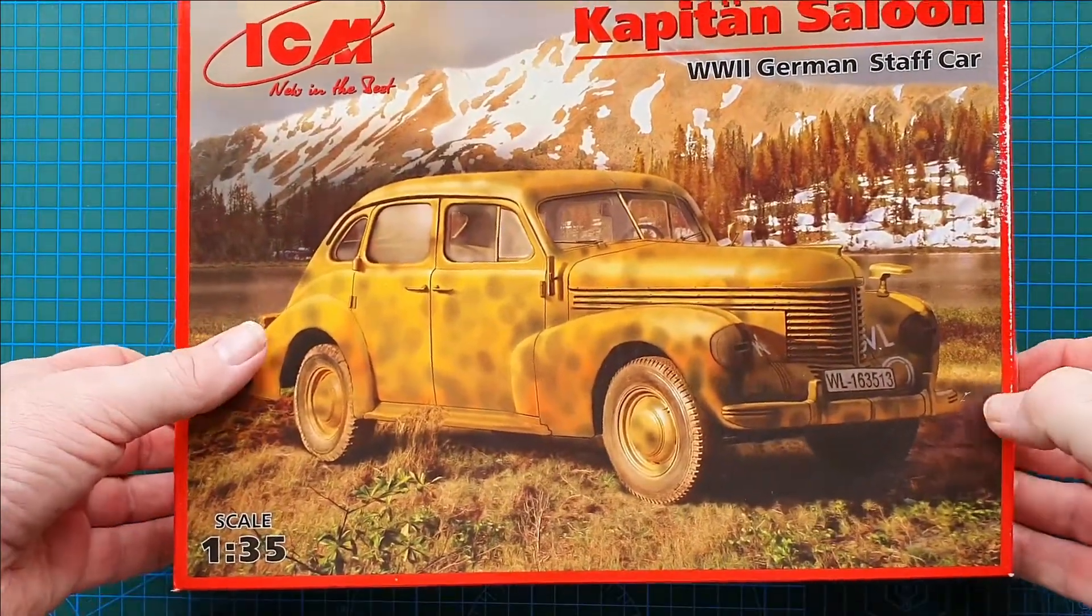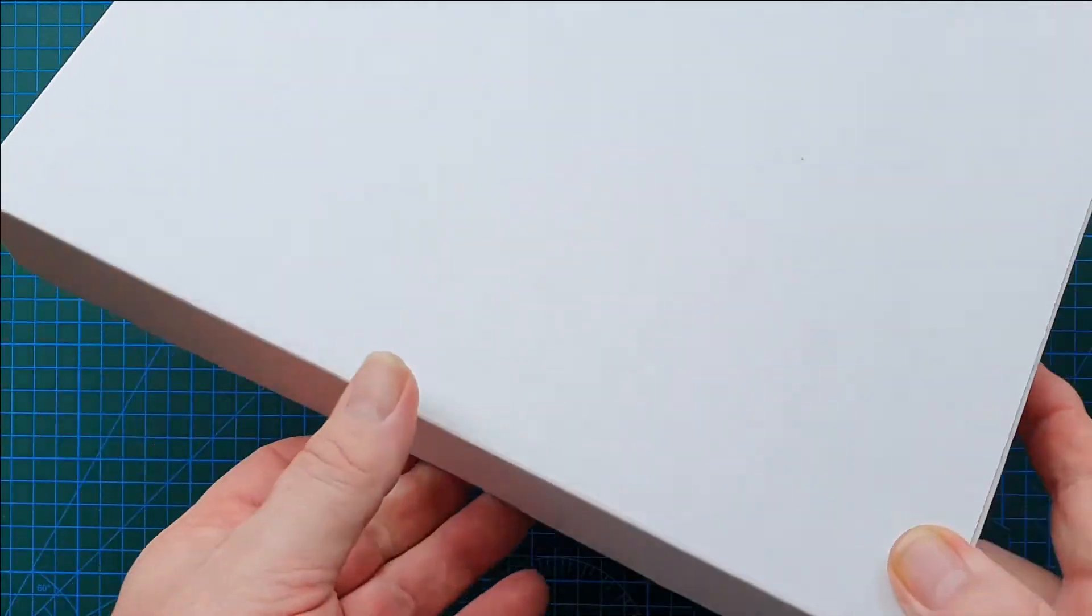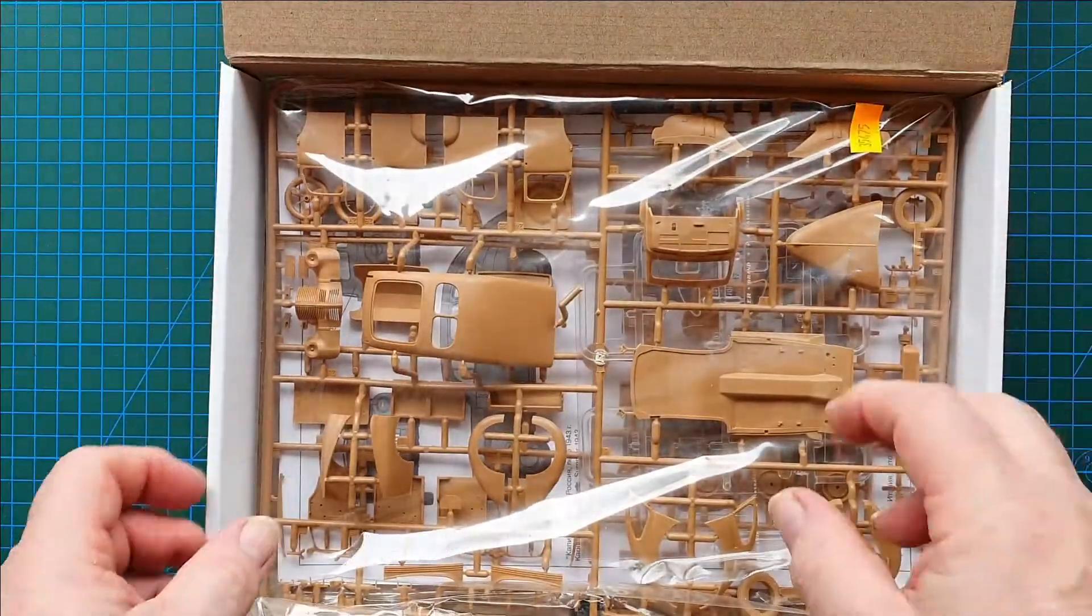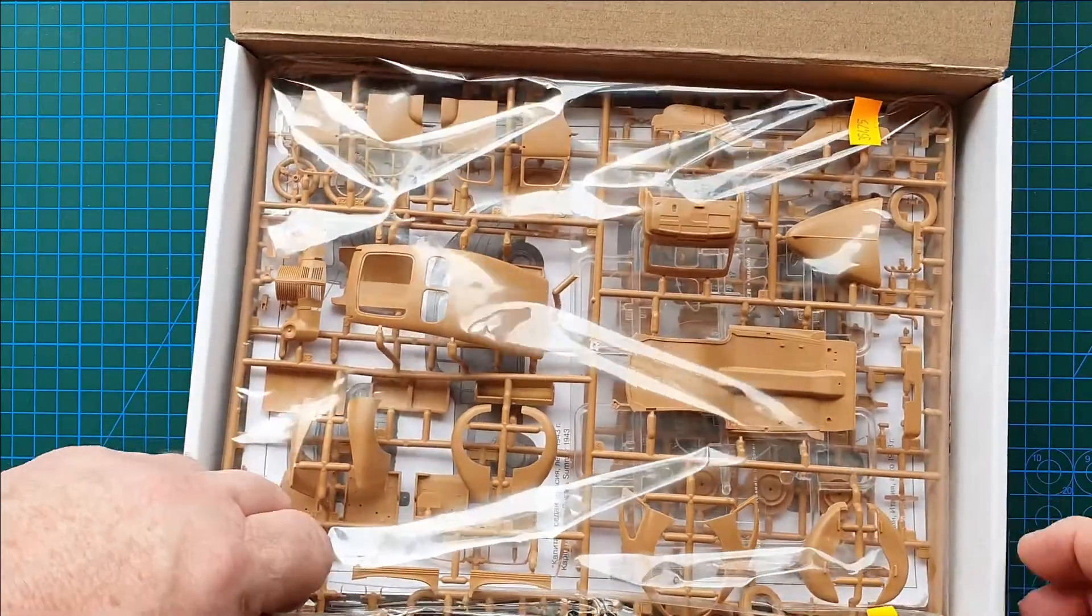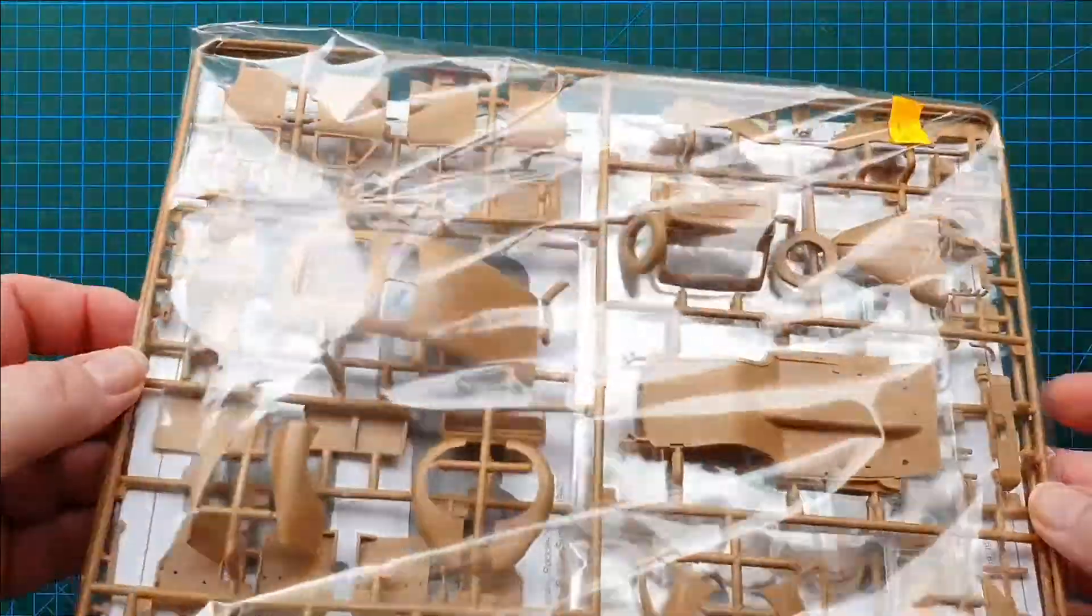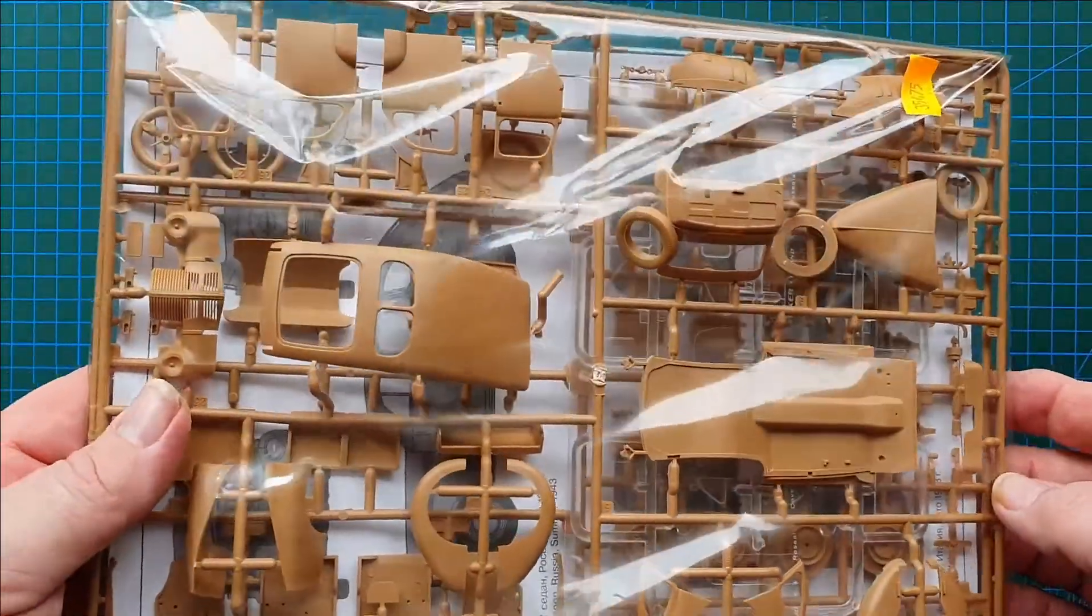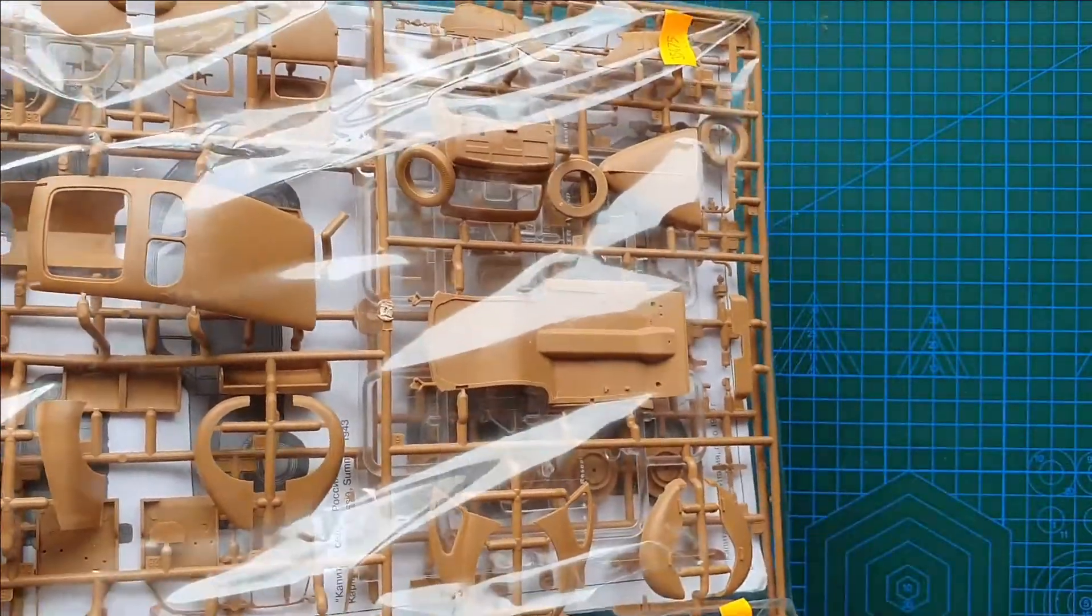That's the box, that's the cover art. Let's open her up. Usual really sturdy ICM box. What we have is one bag containing instructions, sprues, everything. In a second I'll open this bag and we'll have a look at the instructions and the decals.